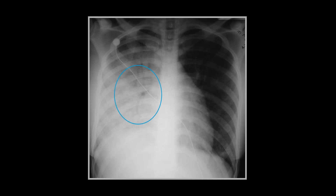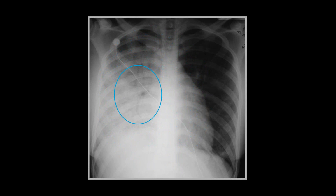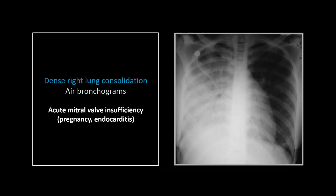This is another consolidation but with air bronchograms, so not post-obstructive atelectasis. You don't see the same volume loss as in the previous case. This is interesting mainly because of the underlying cause — certainly it's pretty nonspecific; it could be an overwhelming pneumonia or a bad lung contusion. What this was, was a pregnant woman who had infectious endocarditis, and this is the classic appearance of mitral valve regurgitation. They burst a papillary muscle, have a flail mitral valve, and go quickly into fulminant right lung pulmonary edema.